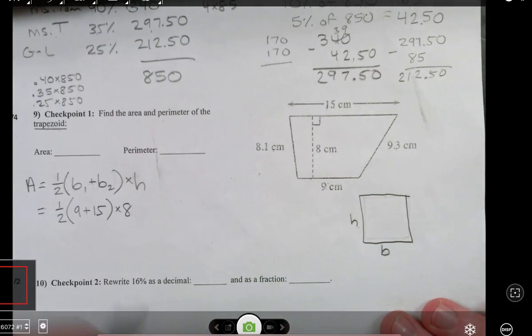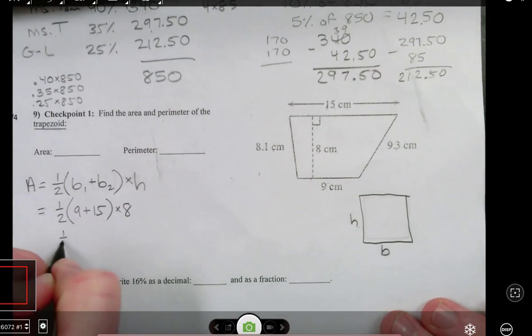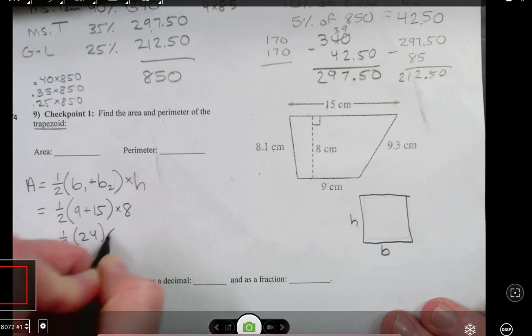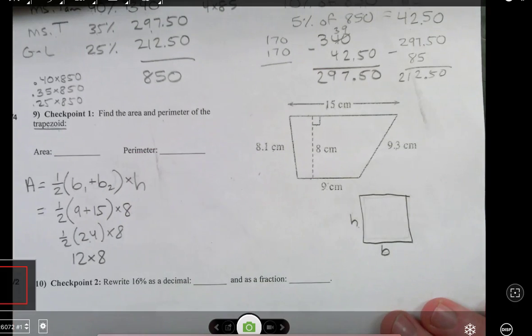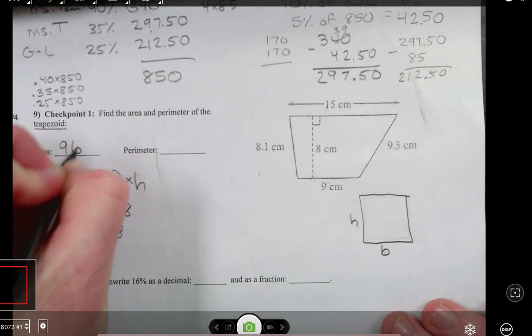So 9 plus 15 is 24. Half of 24 is 12. 12 times 8 is 96. So the area is 96 square centimeters.